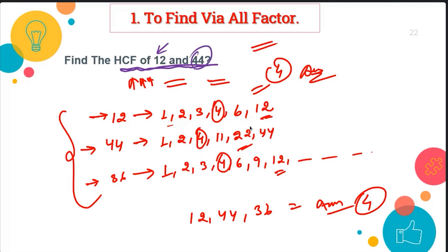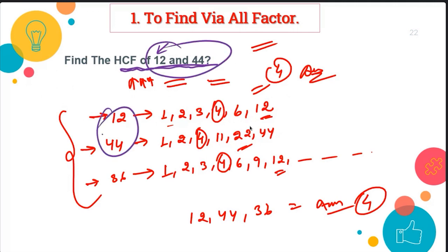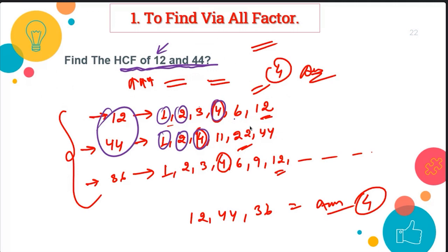Now, what are the factors of 44? It's an even number and has many factors: 1, 2, 4, 11, 22, and 44. We focus on these two sets of factors. In HCF, we look for the greatest common value. The common factors of 12 and 44 are 1, 2, and 4.